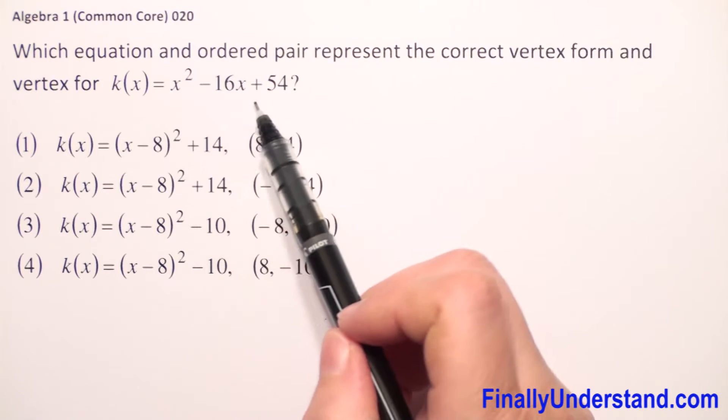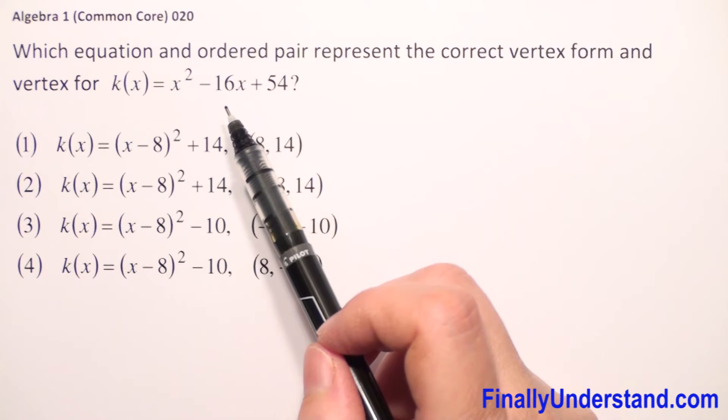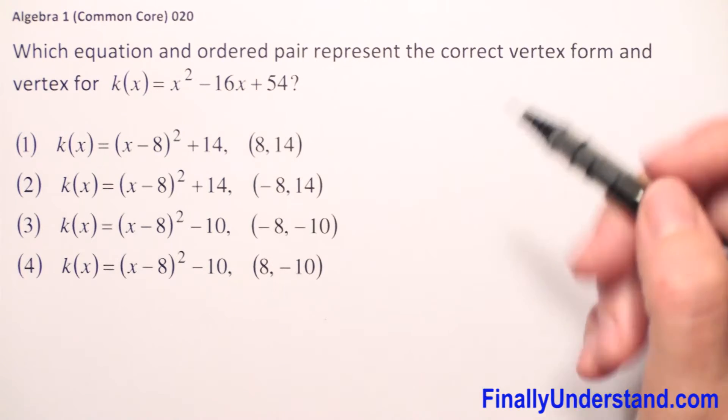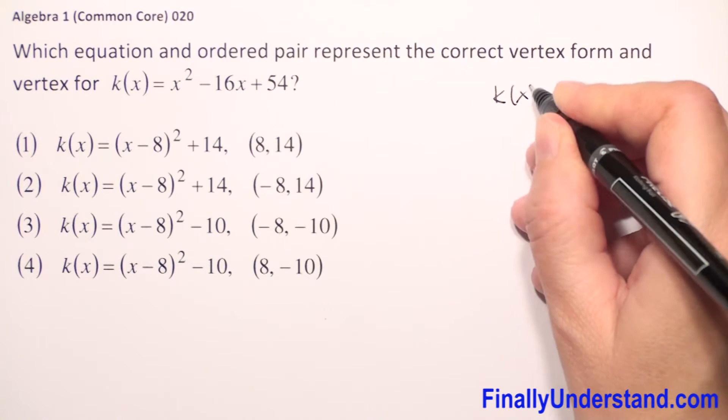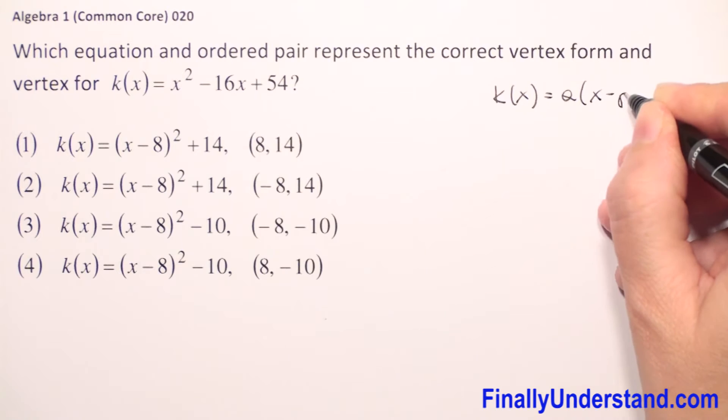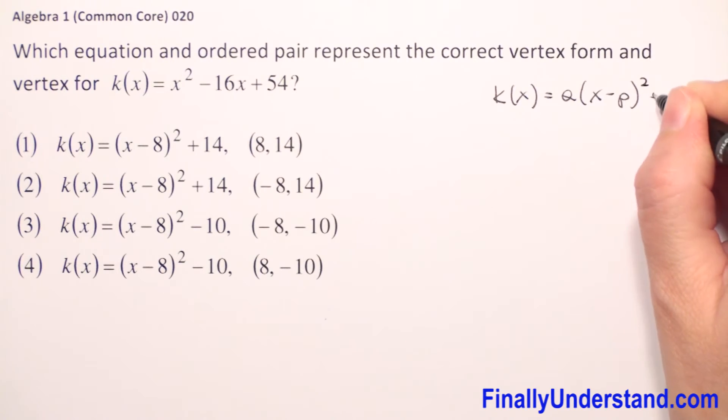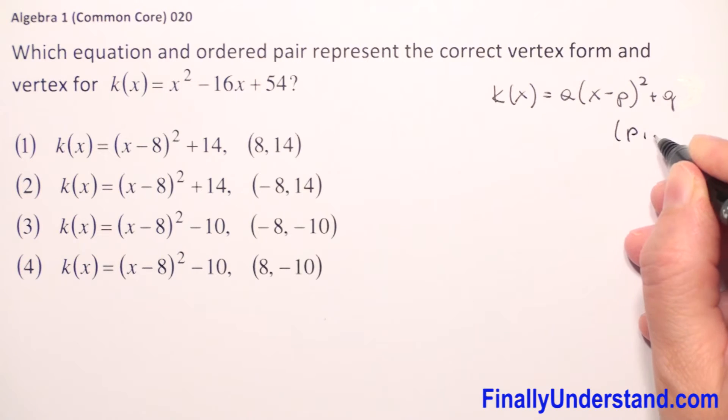We have the general form of a quadratic function. We need to change this general form to vertex form. Let me remind you of vertex form: k(x) = a(x - p)² + q, where p is the first coordinate of the vertex and q is the second coordinate of the vertex.